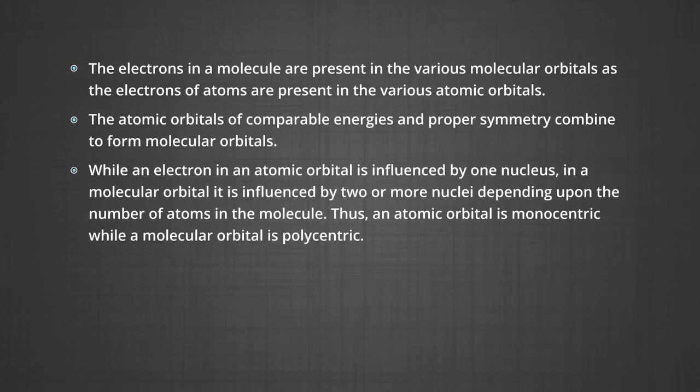While an electron in an atomic orbital is influenced by one nucleus, in a molecular orbital it is influenced by two or more nuclei, depending upon the number of atoms in the molecule. Thus, an atomic orbital is monocentric, while a molecular orbital is polycentric.